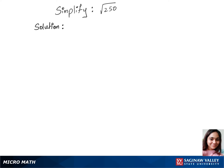To simplify this question, we'll first split 250 to 25 times 10 under the root. Now let's separate the square root between those two numbers, which is root 25 times root 10. We can write root 25 as root of 5 squared, while root 10 remains the same.